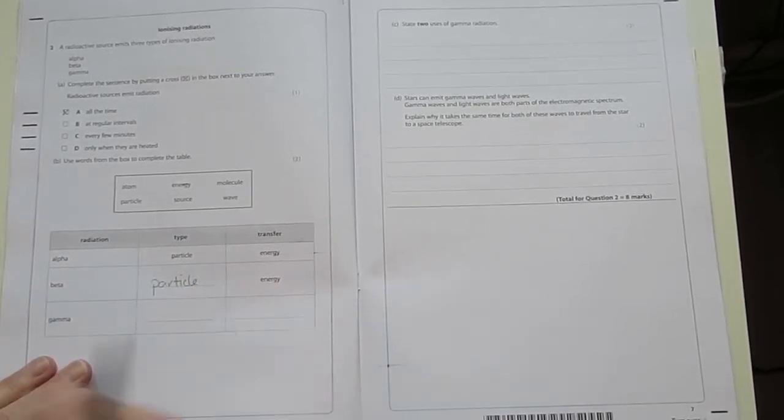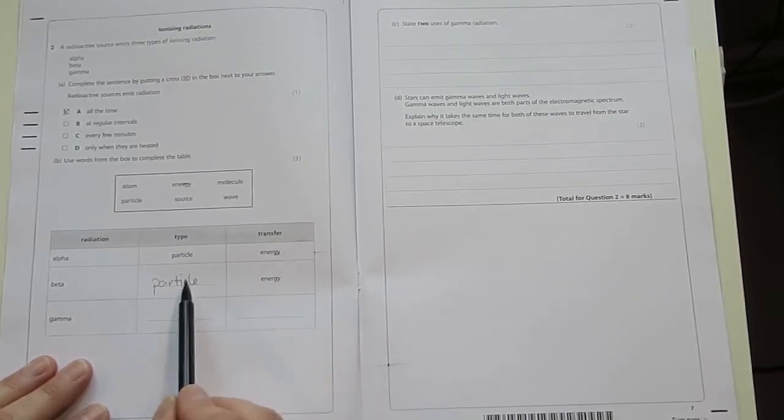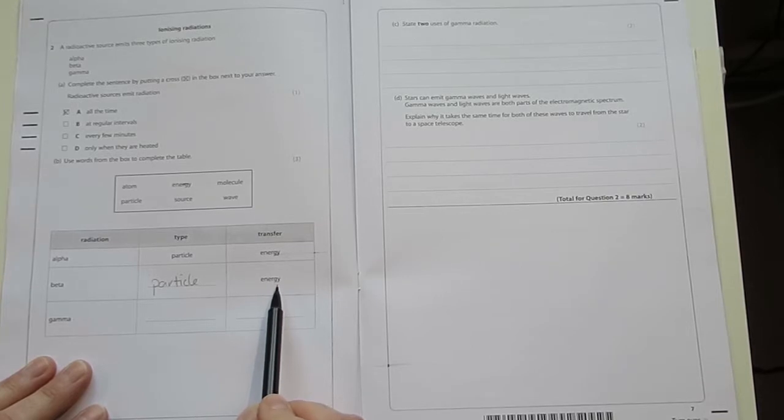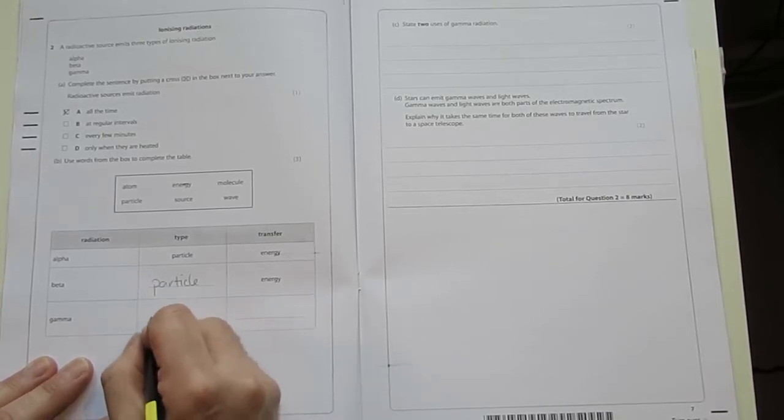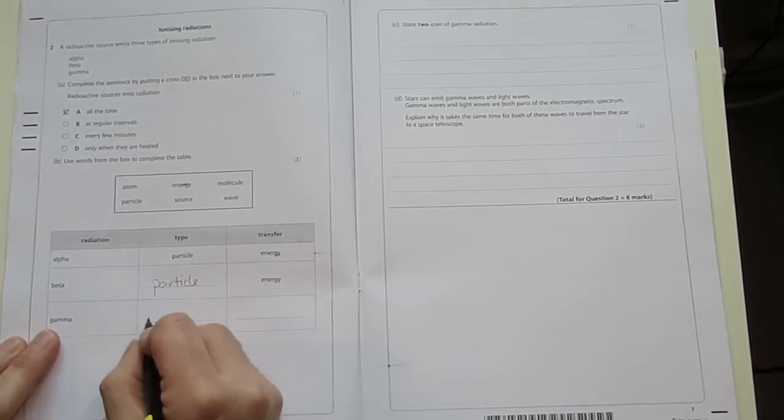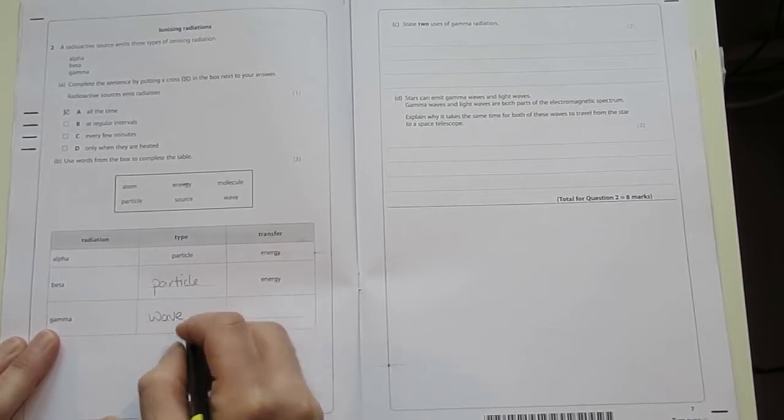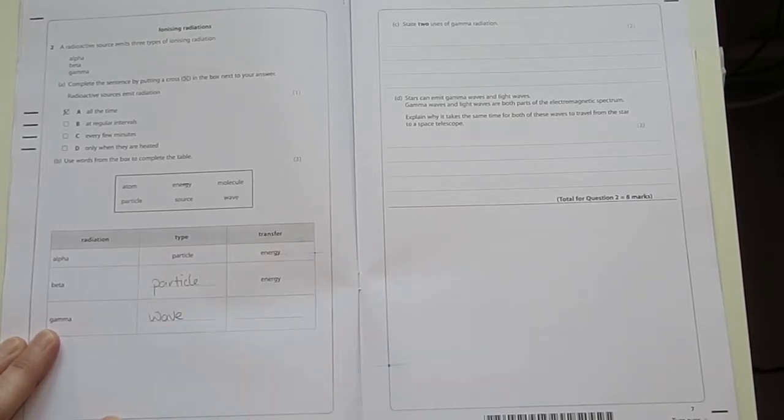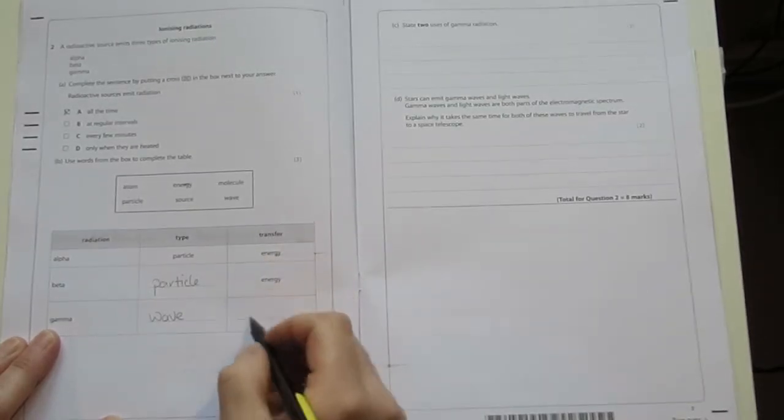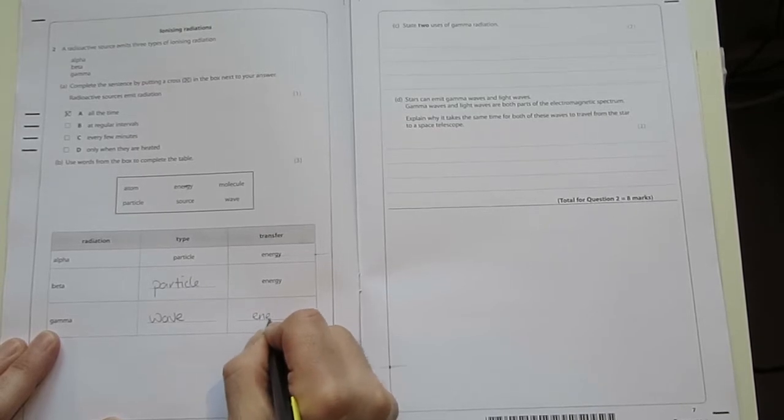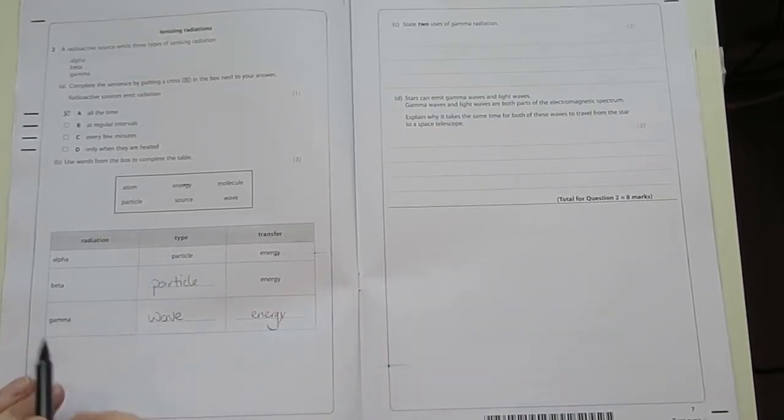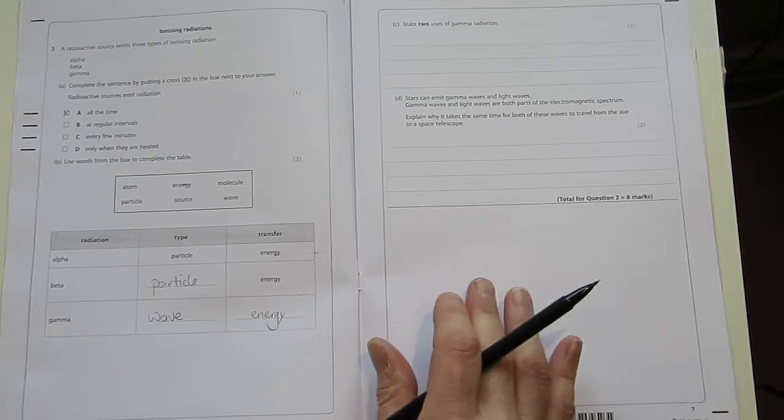It's actually an electron. So it's a negatively charged tiny particle but it does transfer energy. Gamma we should recognise because it's part of the electromagnetic spectrum. It is a type of light, high energy light, so it travels as a wave and it does transfer energy. All of these types of radiations transmit energy.